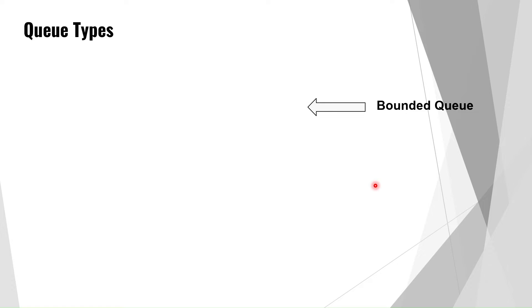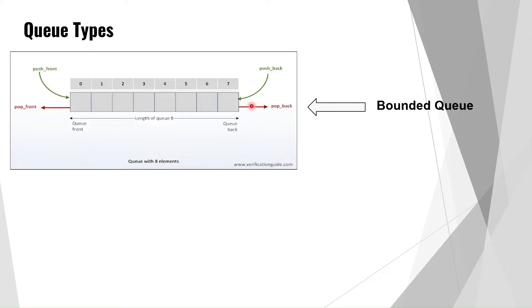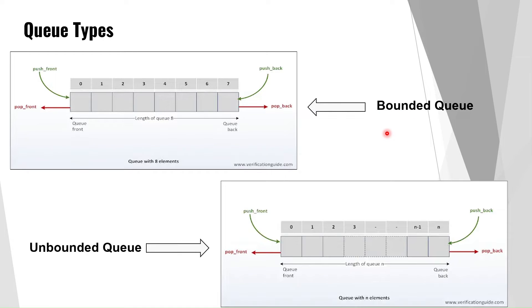In the pictorial representation for a bounded queue, the length is eight, so you can store eight elements. Methods like push_front, pop_front, push_back, and pop_back will be covered as we progress. For the unbounded queue, the length is not specific — n can be anything — so the size is not fixed, which is why it is called an unbounded queue.